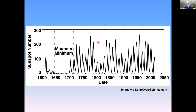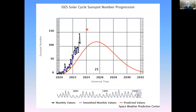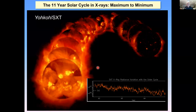Where are we now? We're here — this is a prediction of the cycle for 2024 and beyond, and this is what we've seen so far. We're now seeing more spots than predicted, and that's good. So this may be a much larger maximum. When the eclipse occurs, we'll be close to the predicted maximum, and probably maybe it'll be even greater. So we'll be near solar maximum.